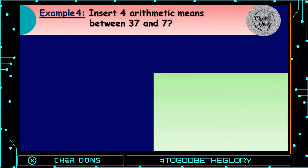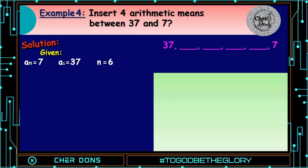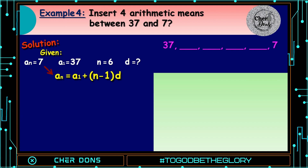Example number 4: Insert 4 arithmetic means between 37 and 7. Given: 37, blank, blank, blank, blank, blank, and 7. a sub n is equal to 7, a sub 1 is 37, n is 6, d is unknown. Applying the formula: a sub n equals a sub 1 plus quantity n minus 1 multiplied by d. Where 7 goes to a sub n, 37 goes to a sub 1, and 6 goes to n. We have: 7 is equal to 37 plus quantity 6 minus 1 multiplied by d.